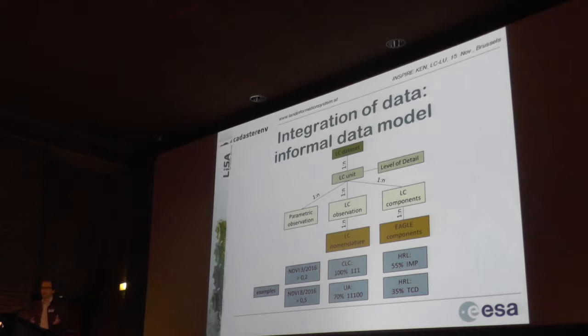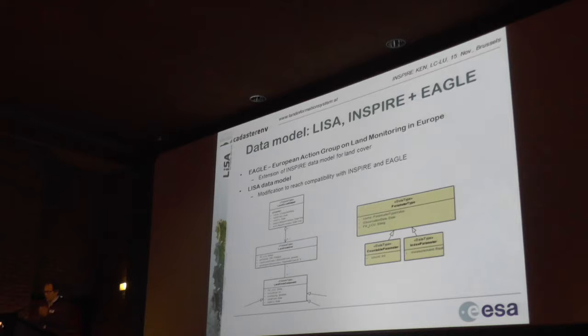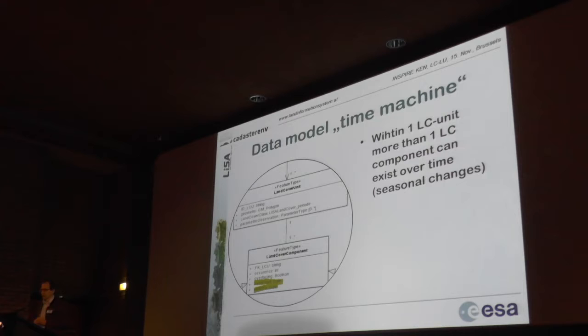We also think you have a temporal configuration. If you think of an agricultural field that changes throughout the year in a cyclic manner, we took this parameter type and added several elements — a countable parameter, the index parameter. The index parameter allows you to say, for example, the NDVI of one Sentinel scene for one single observation. To integrate these, we call it a kind of time machine — so that within one land cover unit you have several land cover components, not in a spatial configuration but in a temporal configuration.